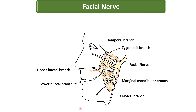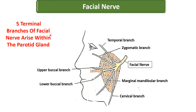Briefly, the five terminal branches of the facial nerve arise within the parotid gland. The facial nerve enters from the posteromedial surface, and the branches traverse through the anteromedial surface, finally emerging along its anterior border and apex.